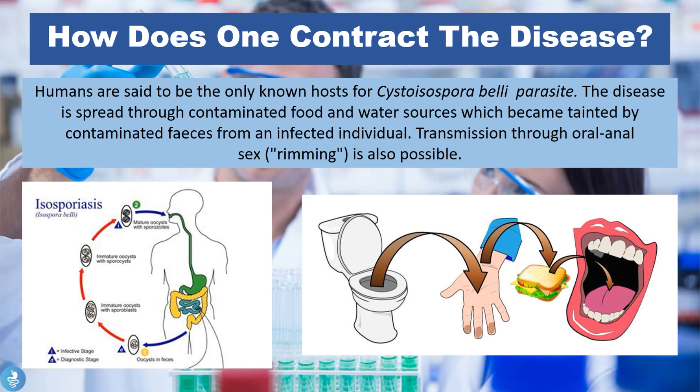One contracts the disease when they ingest these parasites from contaminated food or water sources. This means that vegetables grown in contaminated water, water ingested from a contaminated tap or source, or someone going to the bathroom and not washing their hands properly before preparing a meal — these are all the different ways in which one can contract the disease.